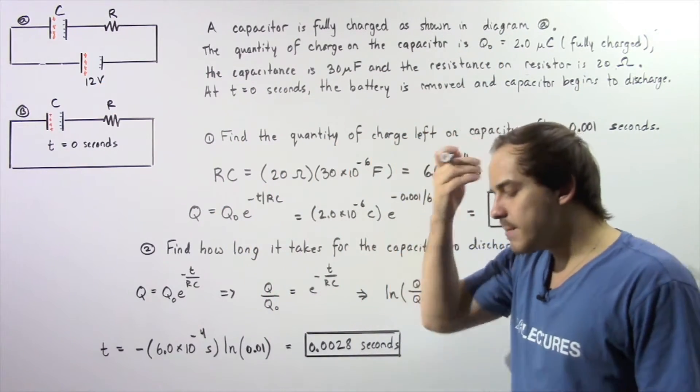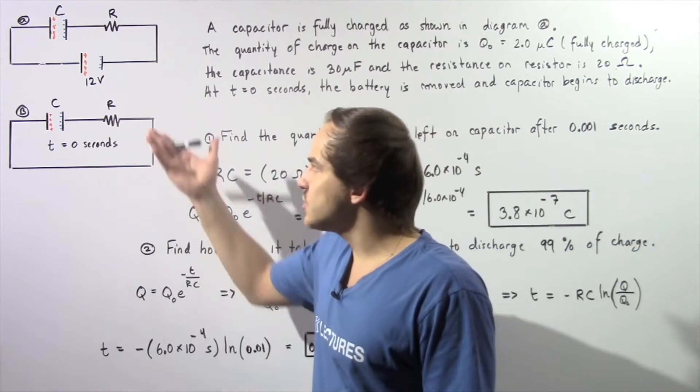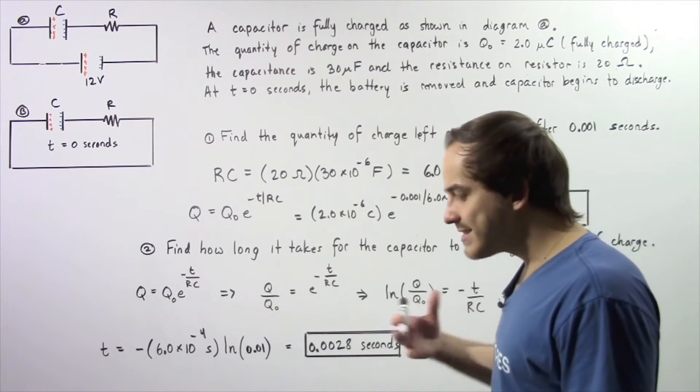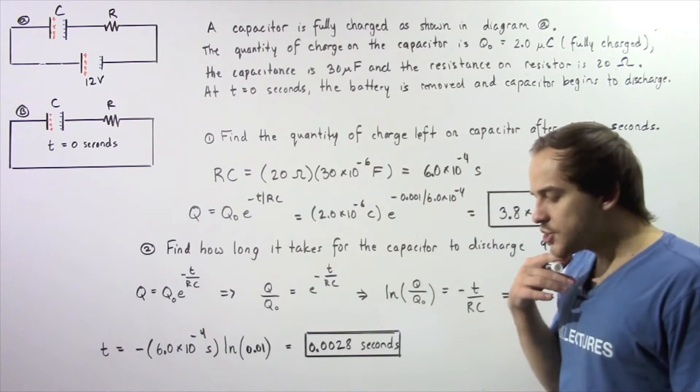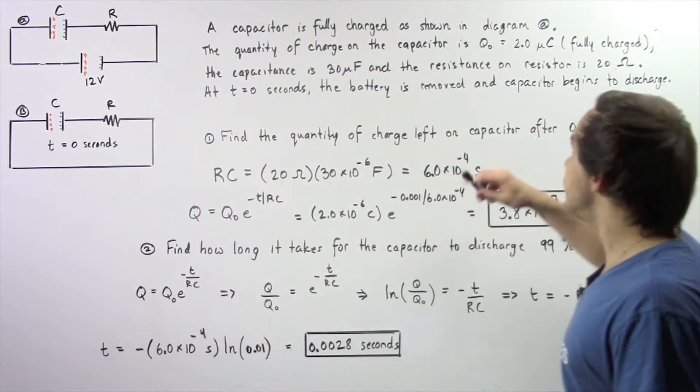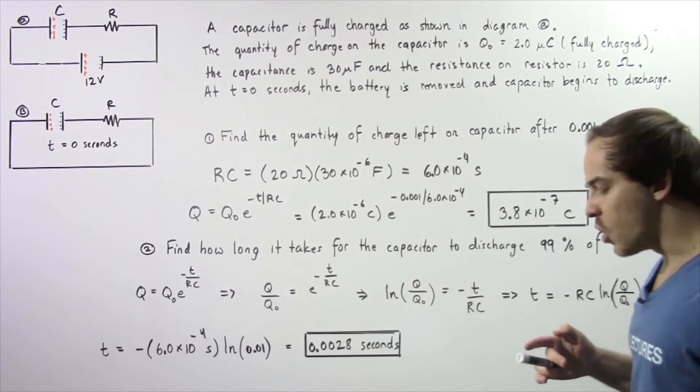We essentially take a battery with a voltage of 12 volts, place it into our RC electric circuit, and that battery charges our capacitor. When the capacitor is fully charged, it has a quantity of electric charge given by Q0, which is equal to 2 microcoulombs.